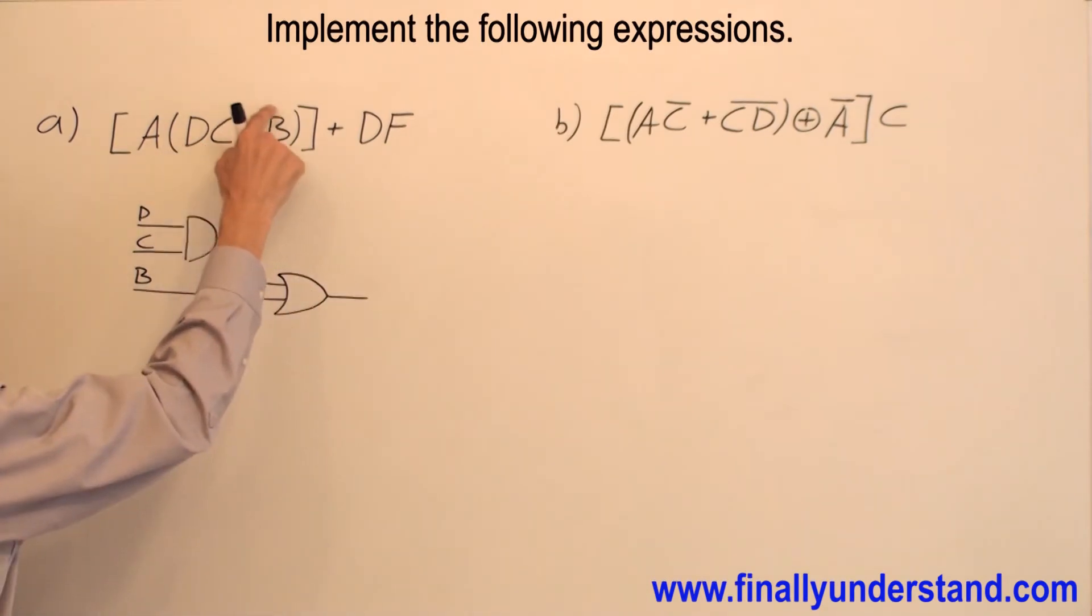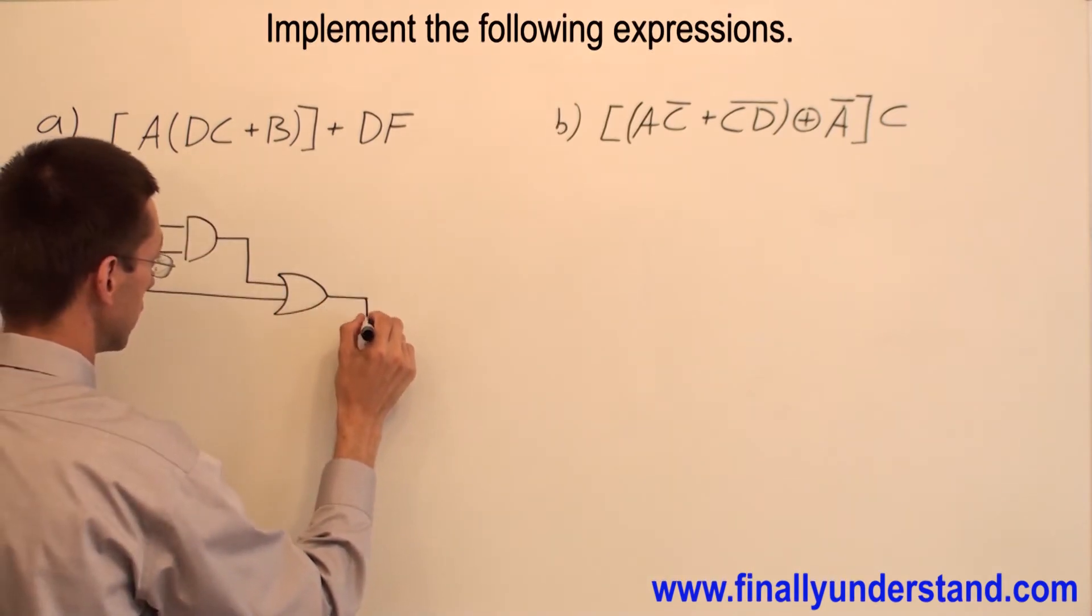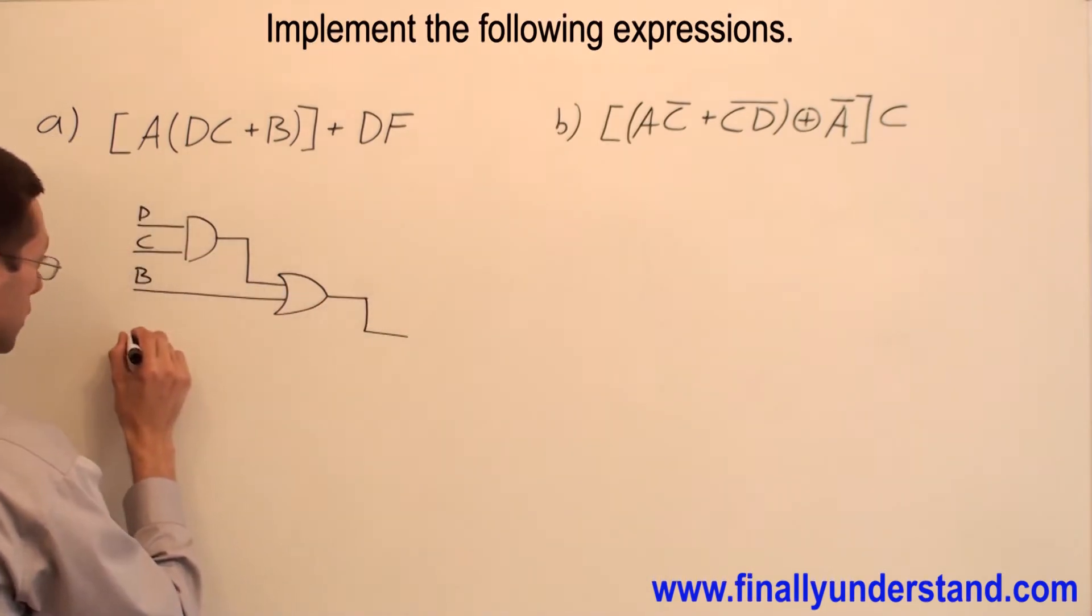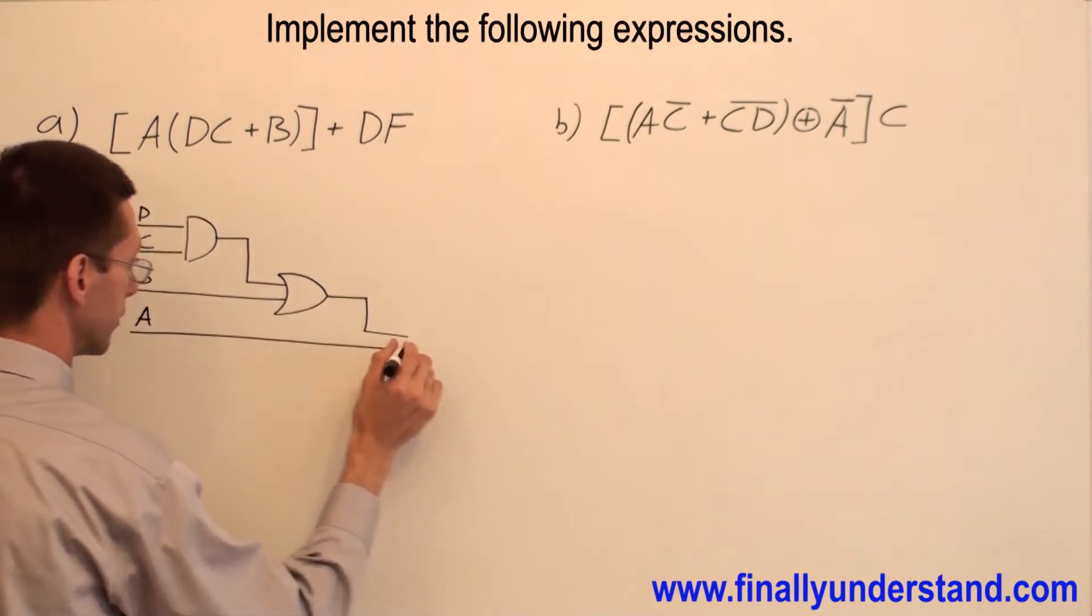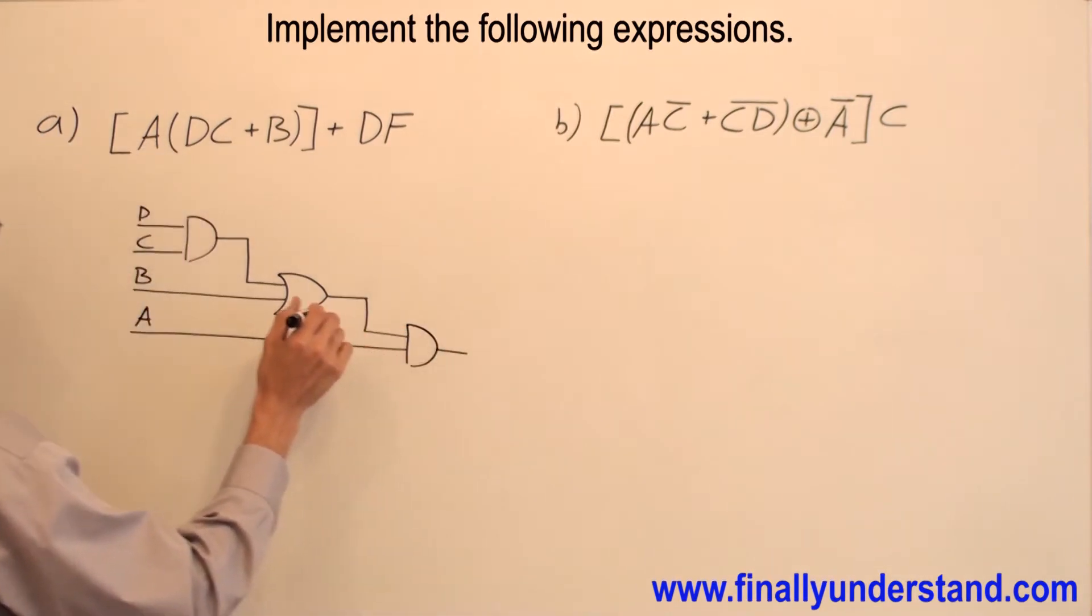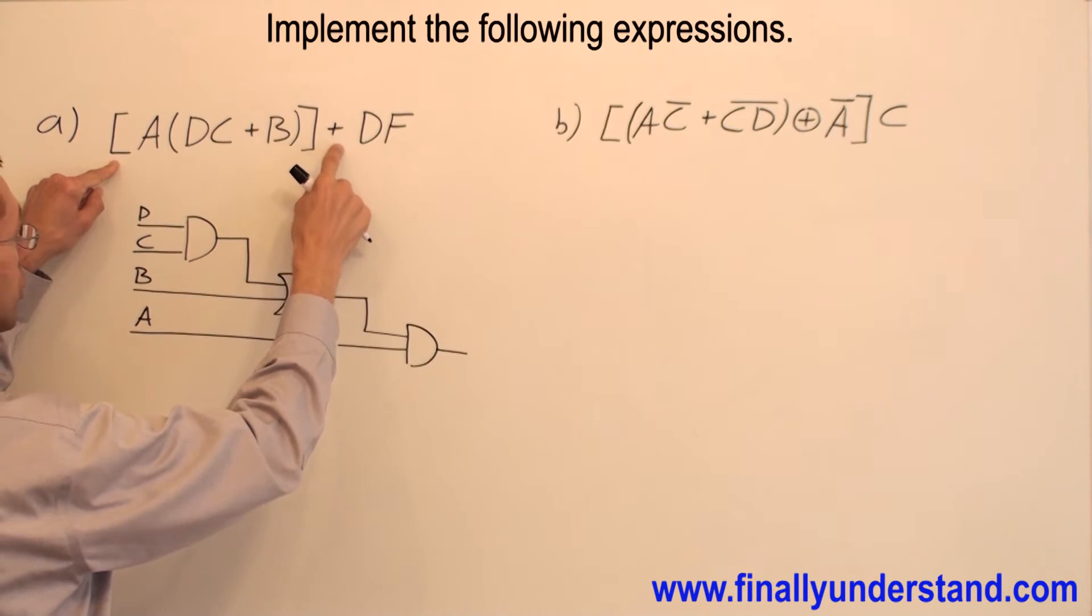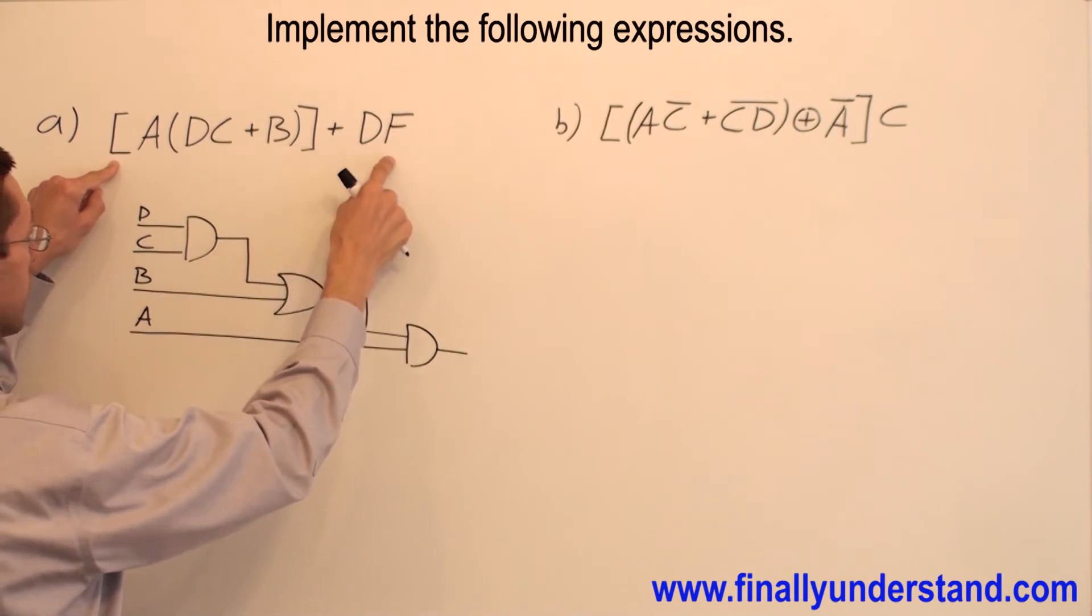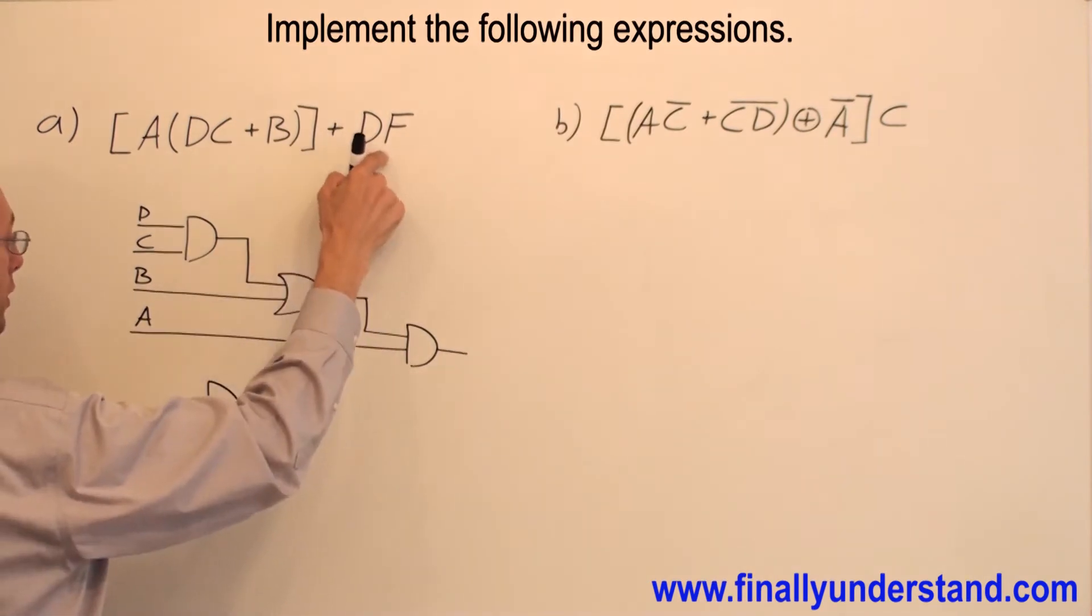And the whole expression inside of the parentheses is ANDed with A. And the whole brackets are ORed with DF. That's why I'm going to draw the NAND gate, DF.